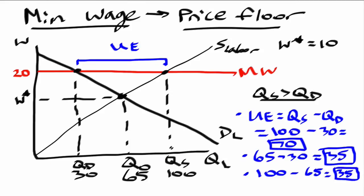If we break this graph down into its component parts, this portion represents the number of people that have lost their job as a result of the minimum wage being implemented. However, this portion represents the amount of people now entering the workforce because the wage is higher. These are the main implications of minimum wage. First, make sure the minimum wage is binding. Second, look at where it intersects demand and supply for labor. From there, you can calculate the unemployment rate, jobs lost, and workers newly willing to work. Next week, we're going to be covering another AP Micro topic on accounting versus economic profit.